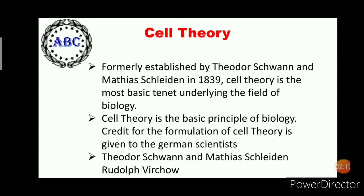This was a major advancement in the field of biology. The cell theory was formally established by Theodor Schwann and Matthias Schleiden in 1839, and is the most basic tenet underlying the field of biology. Credit for formulation of cell theory is given to the German scientists Theodor Schwann and Matthias Schleiden, along with Rudolf Virchow.